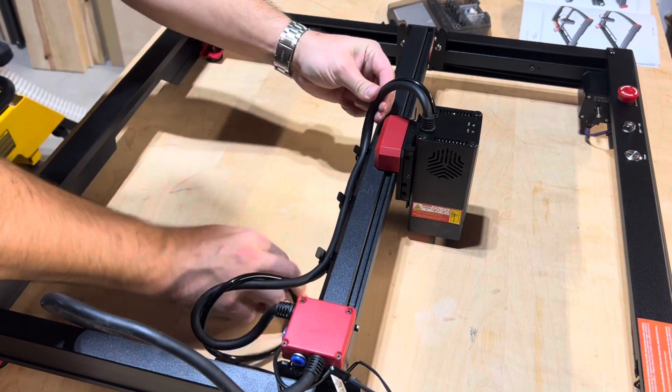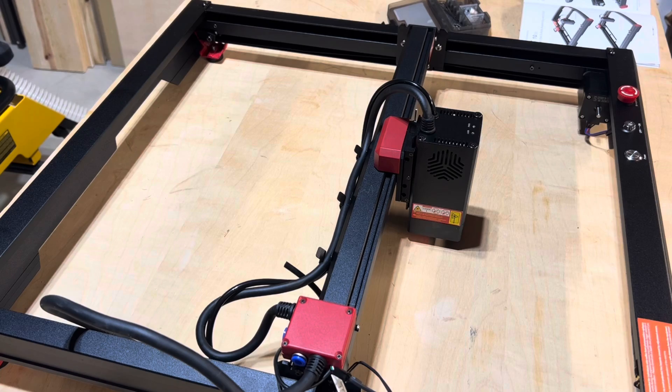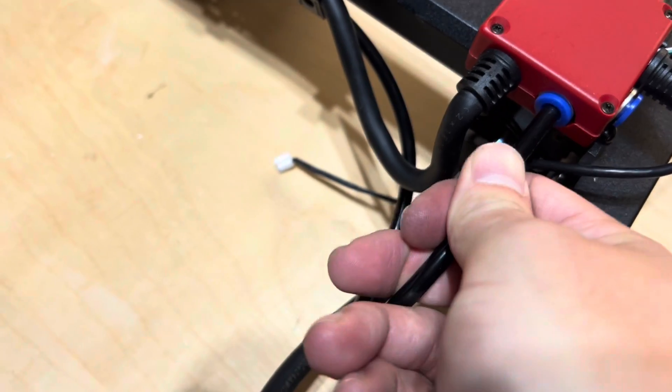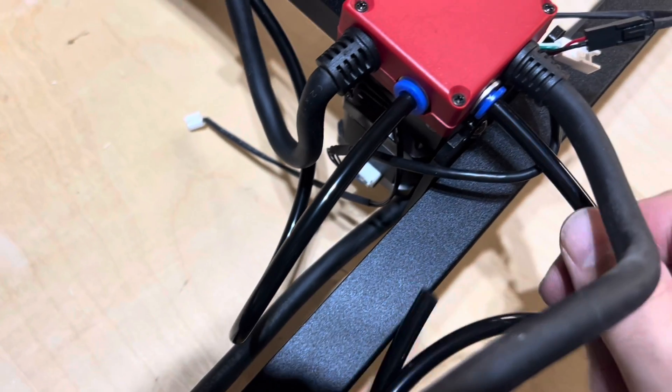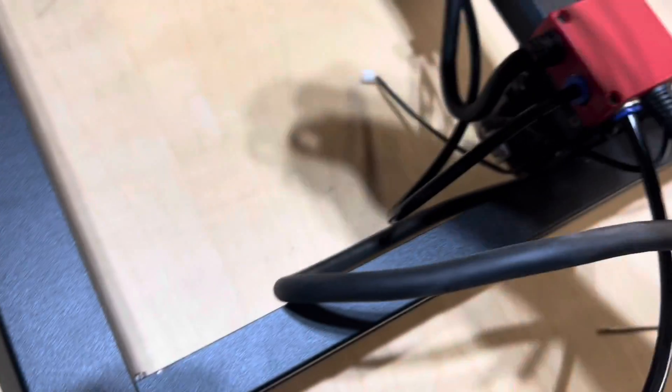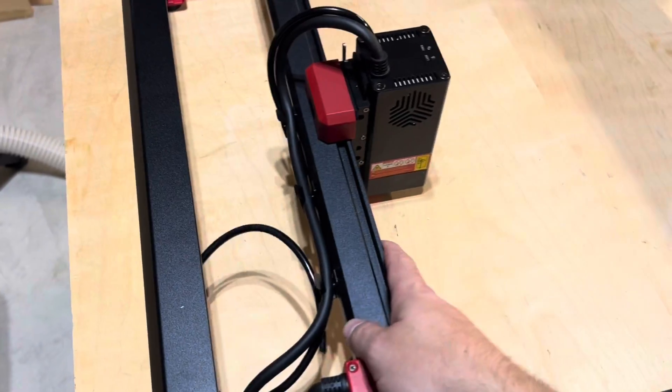Cable management is excellent on this machine. Plug in the other end of the airline in the back. Then put the last section of airline into the side and run the air pipe and main cable through the hole under the y-axis.